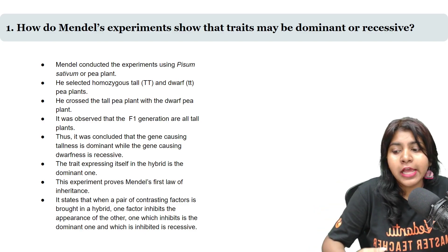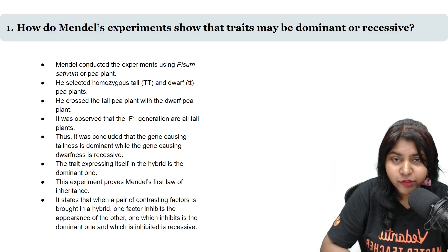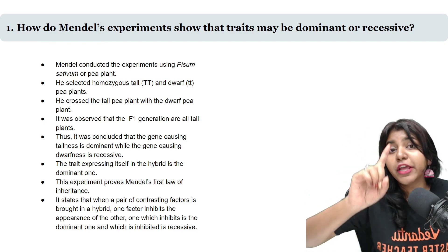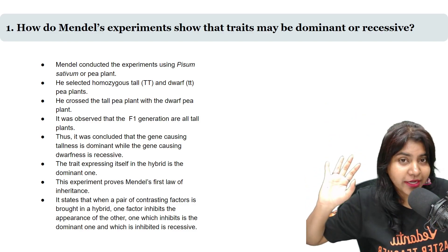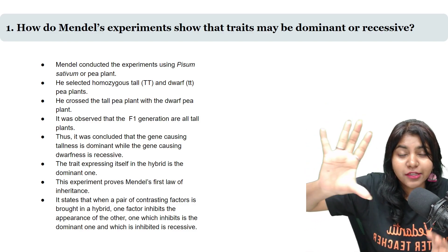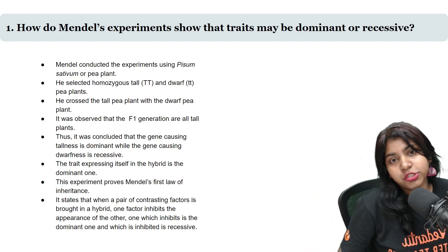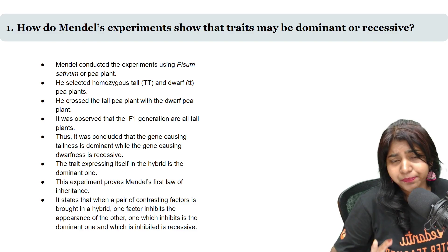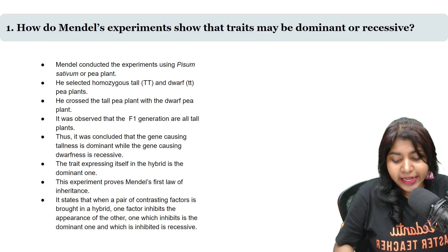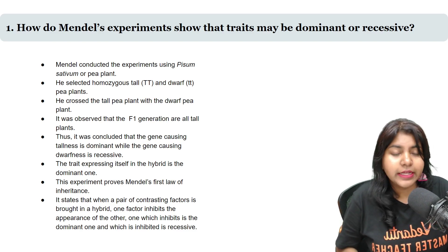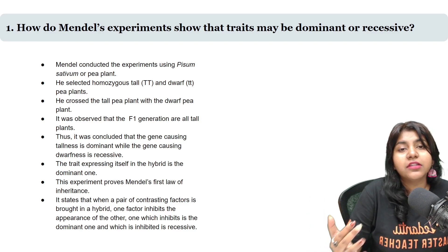In F1 progeny, everyone is tall. One tall parent crossed with a dwarf parent gives tall offspring in F1. But in all four plants, F1 is tall. That's how we know that tall is dominant. After selfing the tall plant, the heterozygous tall gives two: that's why we know three tall plants and one dwarf plant. That's why we know tall is dominant and dwarf is recessive.